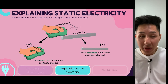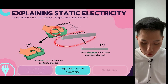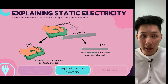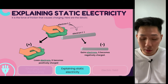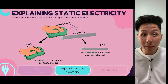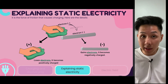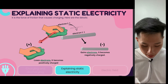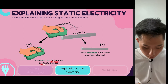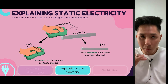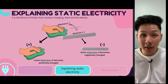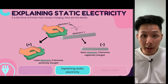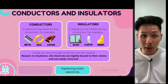What happens when you rub a plastic rod with a cloth is that it causes both objects to have imbalanced charge, meaning the number of protons and electrons will no longer be the same. As for the cloth, because it loses electrons, it will be positively charged because the proton number is greater than the electron number. Whereas the plastic rod will be negatively charged because it has gained electrons.